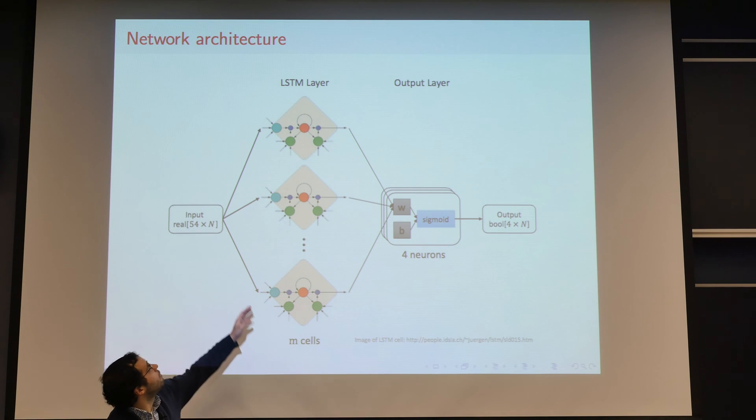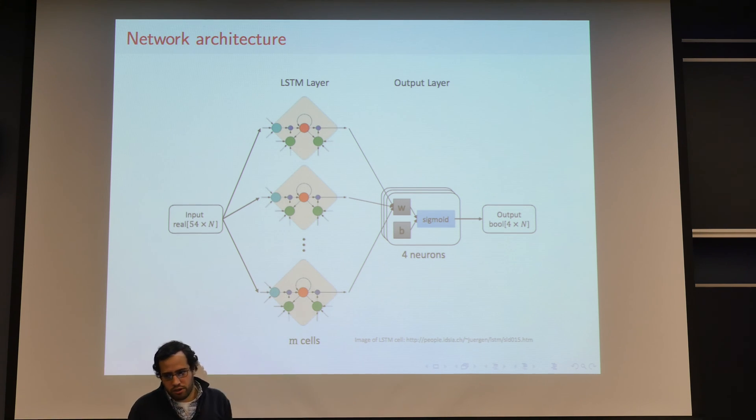So the architecture that we had, we basically have an input that at each point in time has 54 dimensions. We have a layer of LSTM cells. The results I'm presenting here have 50 cells, and this is fully connected, both at the input and the recurrent. The output of the LSTM layer is fed recurrently into all of the other cells. And then we have an output layer through a sigmoid.